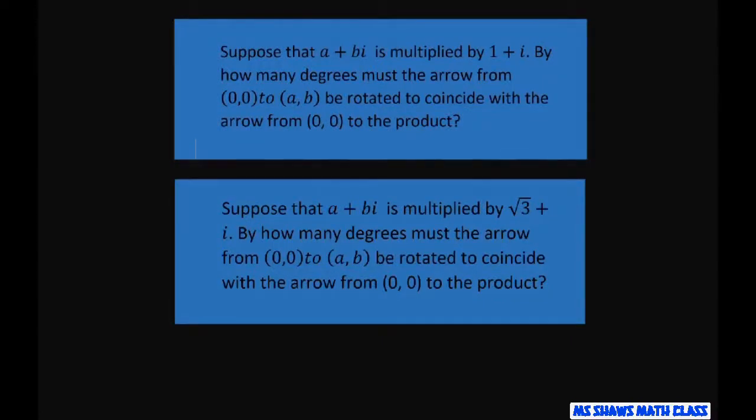Hi everyone. Suppose that a plus b i is multiplied by 1 plus i. By how many degrees must the arrow from the origin to (a, b) be rotated to coincide with the arrow from (0, 0) to the product?